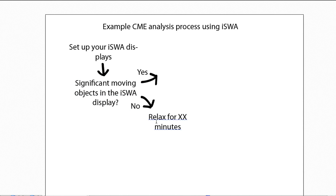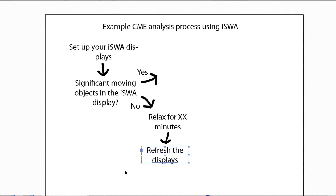Once you have relaxed for a while, you refresh the displays and go back to the beginning of the process to identify if there are any significant moving objects in the ISWA displays. This branch of the process operates as long as there are no significant moving objects. But if you do identify something significant and moving, the actions change.